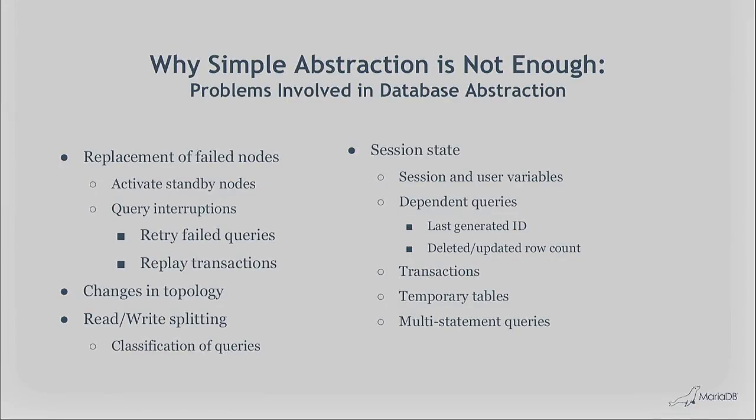So why can't we simply be content with those methods? There are several problems. How do you handle when a node fails or needs to be replaced? When a connection drops, you have to retry the transaction and handle that in your application. Changes in topology are another issue: if you have a master-slave setup and the master changes, how is that handled? These are things that need to be solved by a proper abstraction layer.